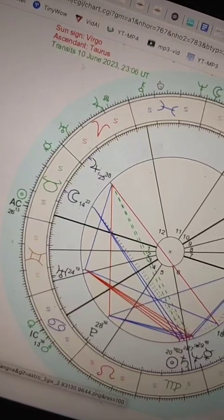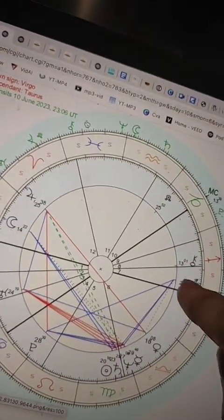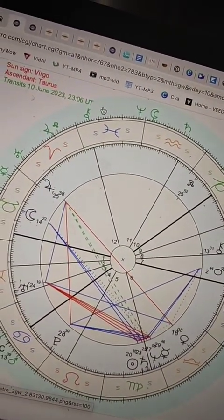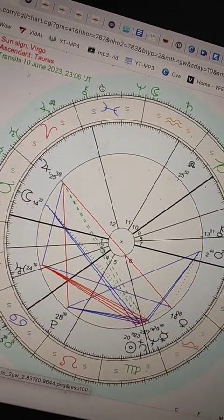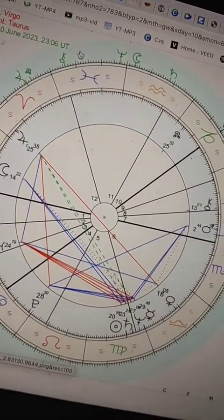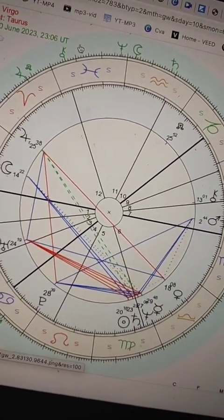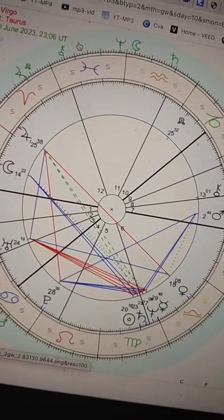So now with the prediction with Putin, there is Neptune squaring his Mars that started in April and May. And what this is, is an element of feeling like the understanding of the person is being framed. So there's this understanding, knowing that he's being framed.